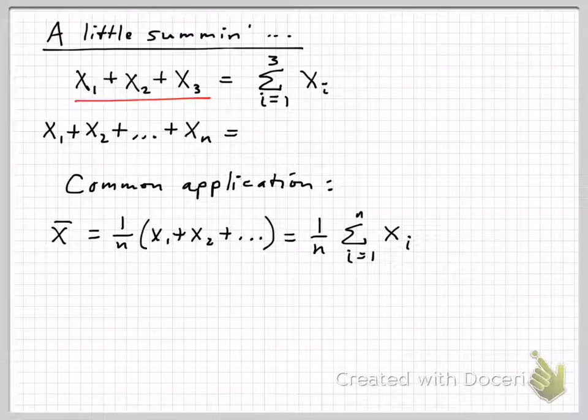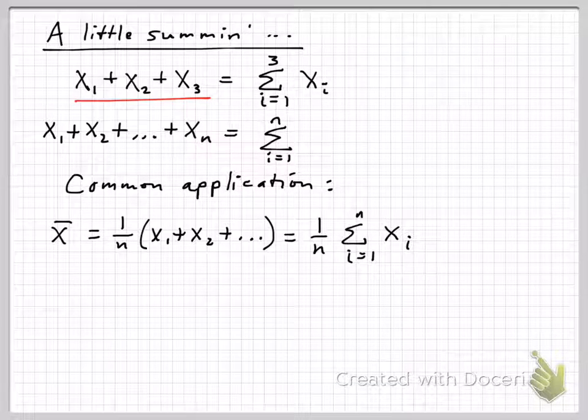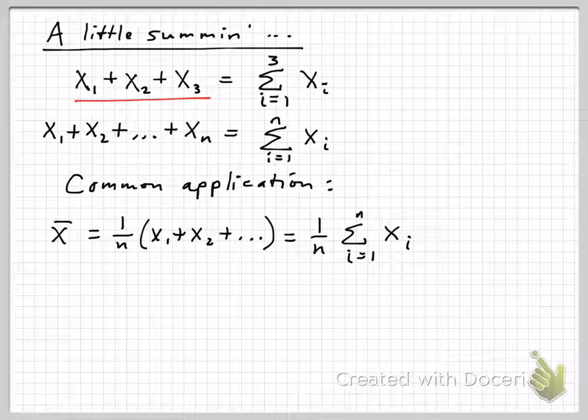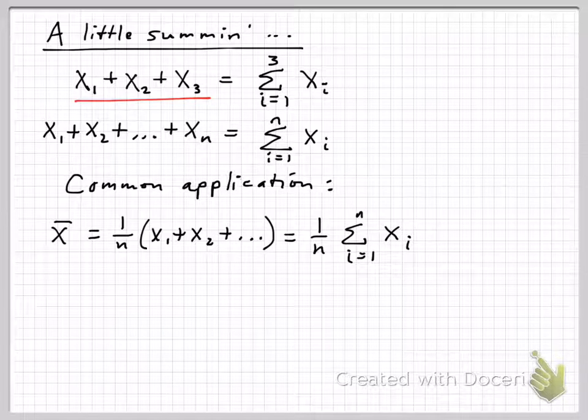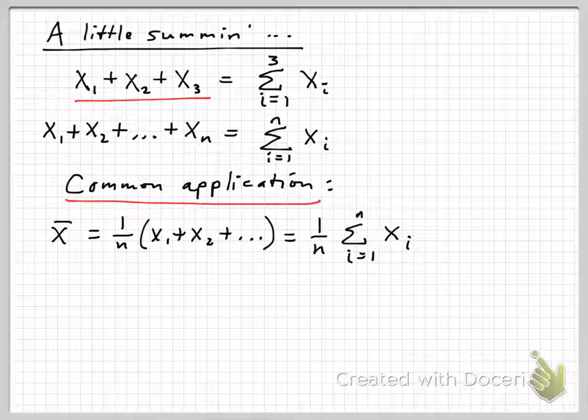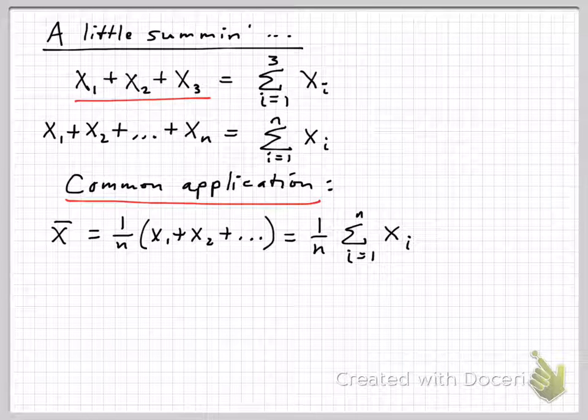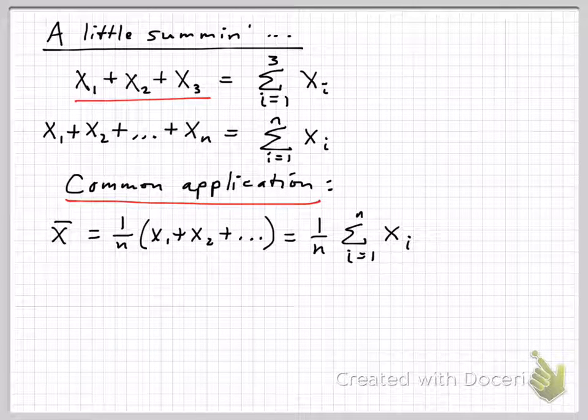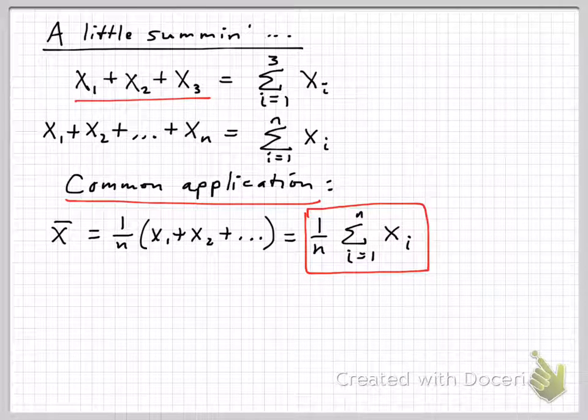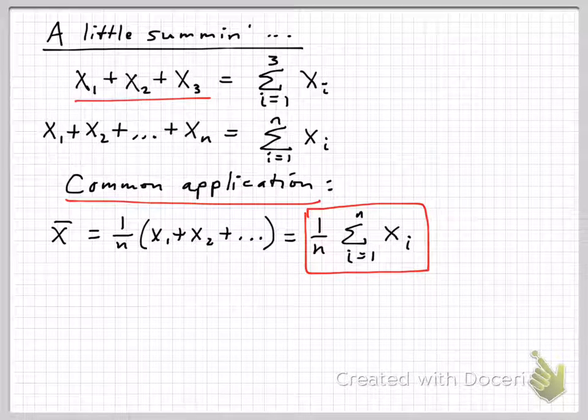Obviously, this can be generalized to n observations or numbers in the string. So it's i equals 1 to n of xi. And it's as simple as that. Common application, of course, is we add up all kinds of things in statistics. The sample mean x bar is simply 1 over n times the sum of the numbers. So it's the arithmetic average. And that we can see is easily shown in summation notation as 1 over n times the sum of the x's, i equals 1 to n.